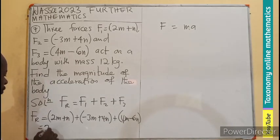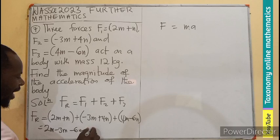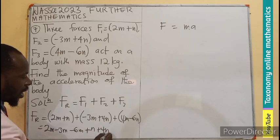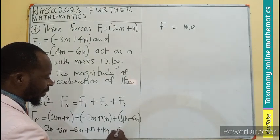So in this case, I have my 2m minus 3m plus 4m. That's the m coming together. Then the n plus 4n, this is going to be minus 6n.